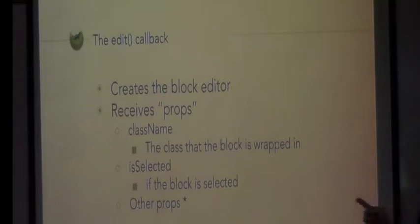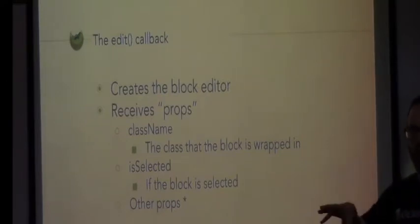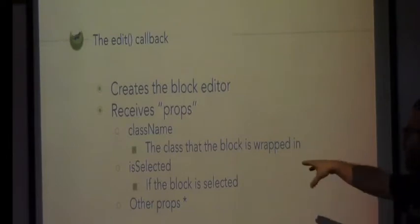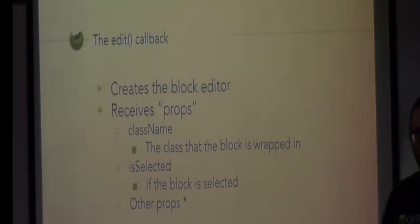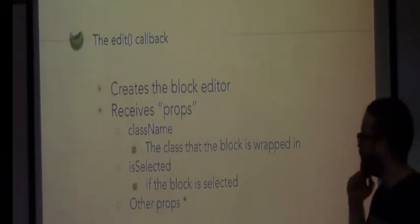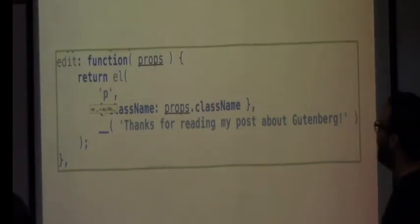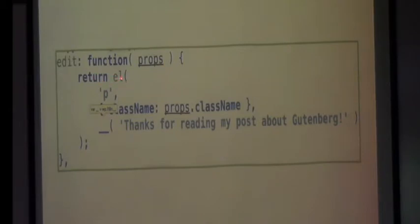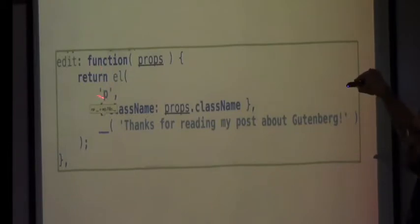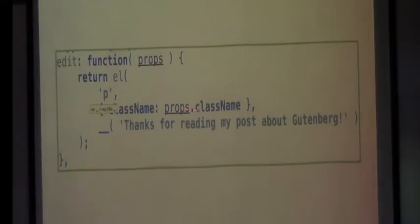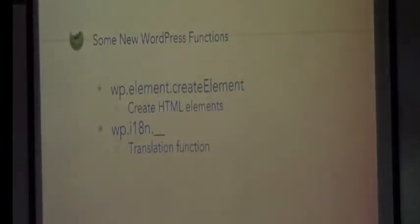isSelected is either true or false based on whether the block is currently selected. Every time it gets selected or unselected, we have an opportunity — it's all updating in the browser dynamically without refreshing the page. This is my edit function, very zoomed in. This function createElement creates HTML elements. What is this? It's of type 'p' — so it's a paragraph. It has one HTML attribute, className — props.className — and then just the string 'Thanks for reading my post about Gutenberg.' Notice that it's inside a translation function.